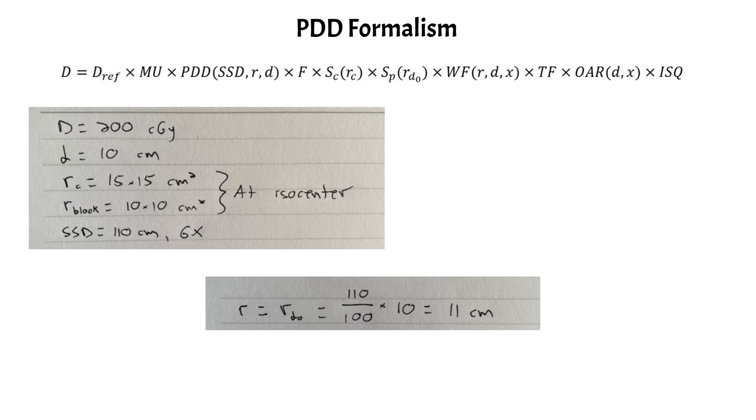Remember, the PDD uses the blocked field size. And if we do that calculation, we get a blocked field size at the surface of the phantom of 11 centimeters.